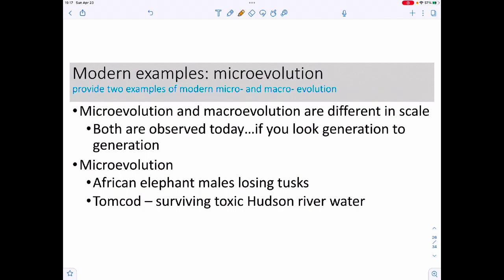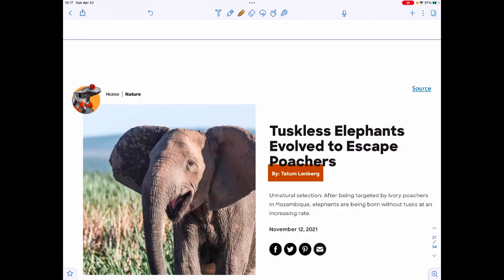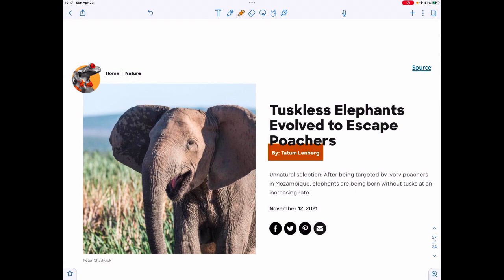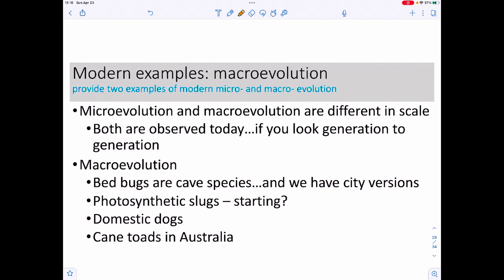We have to just worry about the scale in which we look. Some really simple examples of microevolution—these are generational changes. African elephant males are losing their tusks because it's actually an advantage to not have those tusks because you're not going to get murdered. There's a fish called the tomcod which has recently been able to survive the toxic Hudson River water around New York City, whereas things normally couldn't live in that water. These are interesting changes that have been occurring.